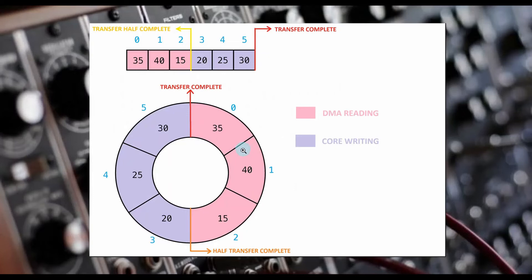While the DMA is streaming out half the buffer's data, the core can be filling in the other half with new data. This way we get a steady stream of data out.